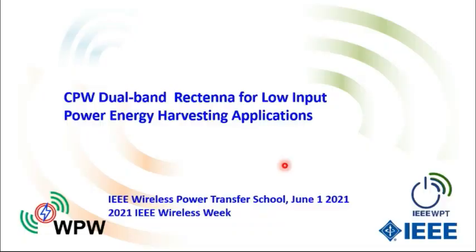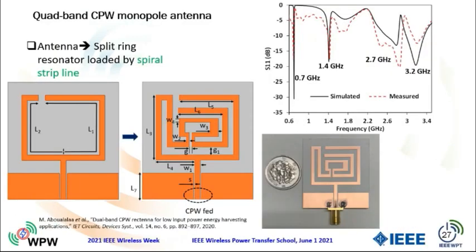This is another design: a CPW dual-band rectenna for low input power energy harvesting applications. A quad-band CPW monopole antenna is used for this design. The antenna consists of a split-ring resonator loaded by a spiral line distribution, as we will show by the current distribution at each mode of operation.